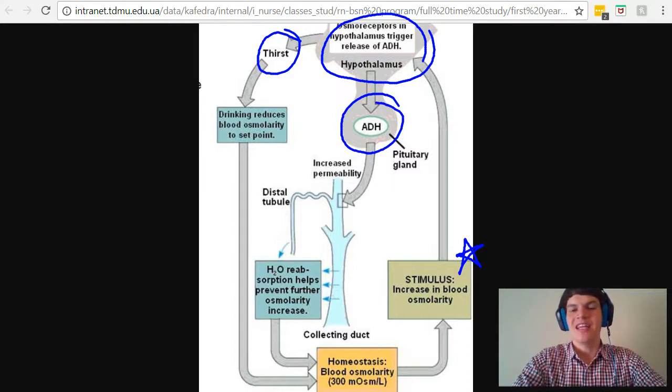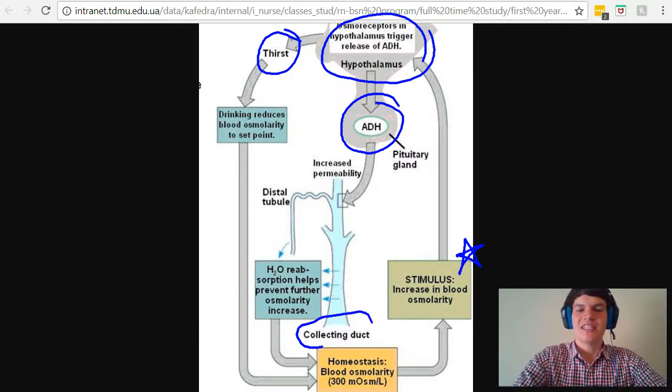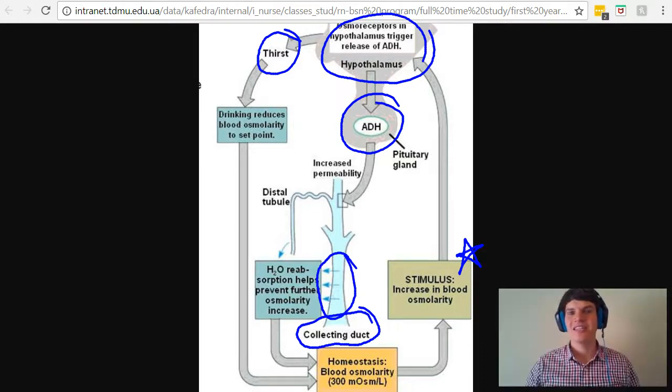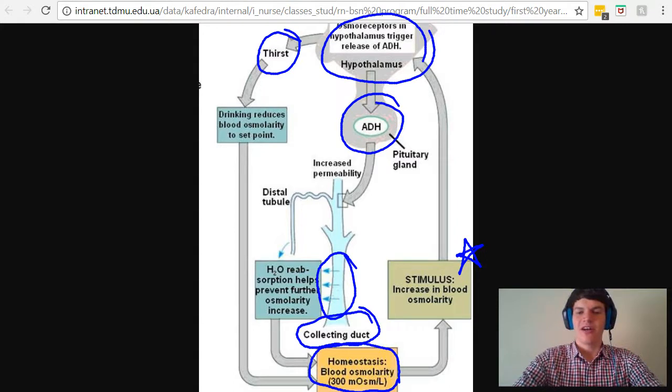The increased production of ADH is going to act on the collecting duct of the nephron, increasing its permeability, causing more reabsorption of water. Thus, both thirst and ADH are increasing the amount of water in your bloodstream, which will lead to a decreased osmolarity.